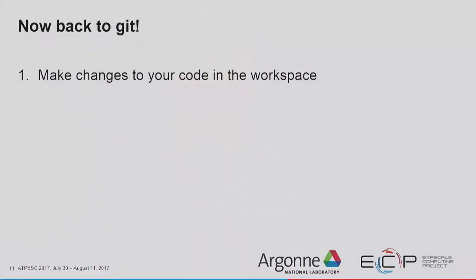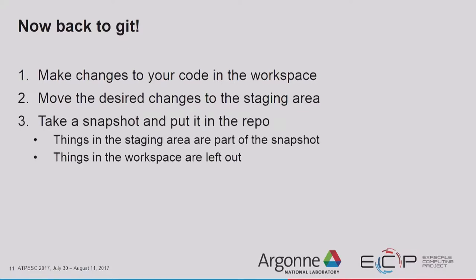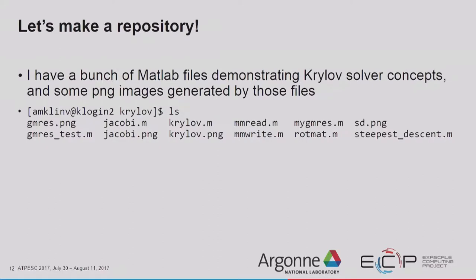Back to Git — our workflow is very similar. We make changes to the code in the workspace — that was our kitchen counter. We move the desired changes to the staging area — that was where the camera was pointed. And then we take a snapshot — that's actually what it's called in Git, a snapshot, just like photography — and we put it in the repository. The things in the staging area are going to be part of the snapshot; things in the workspace will be left out.